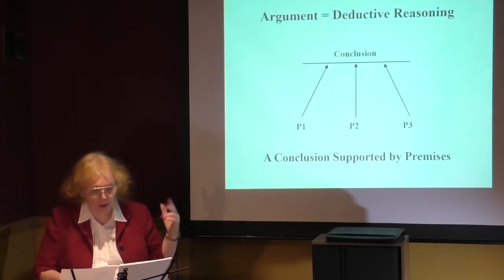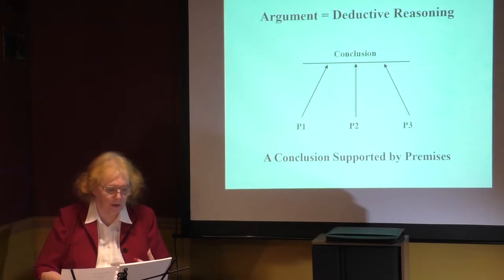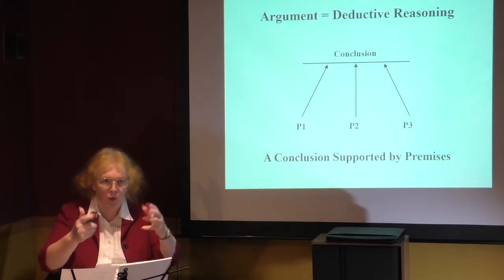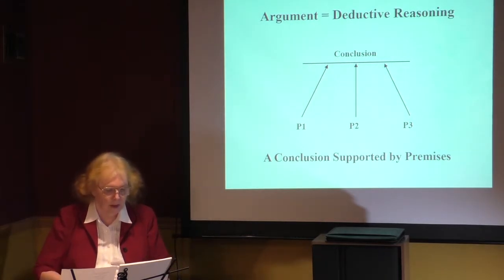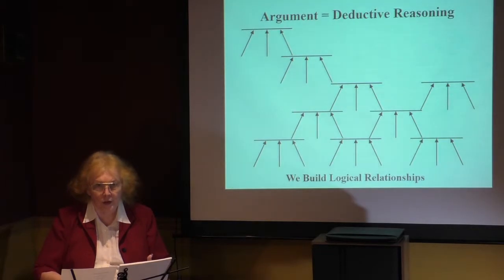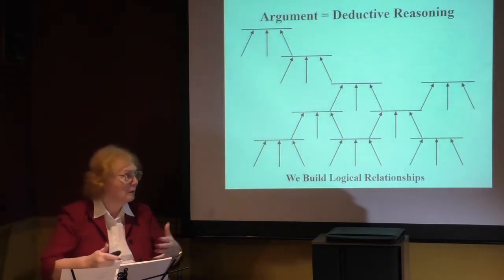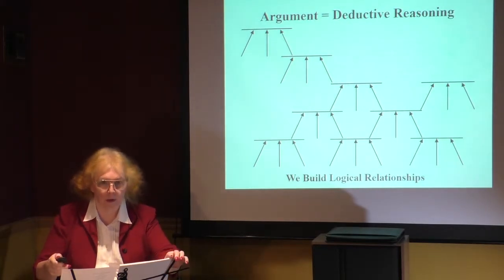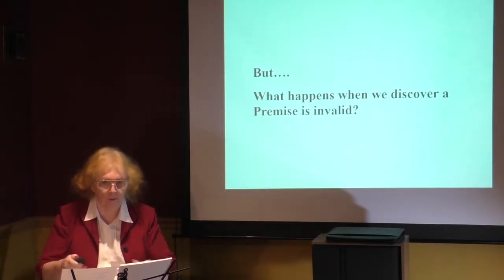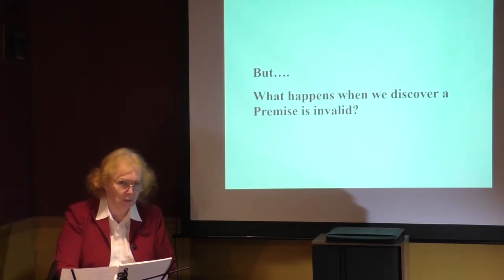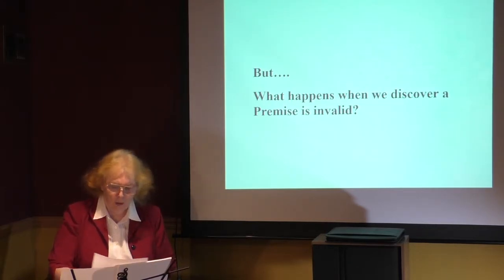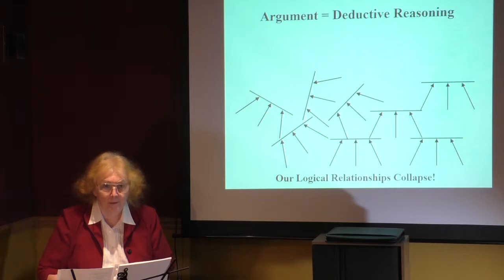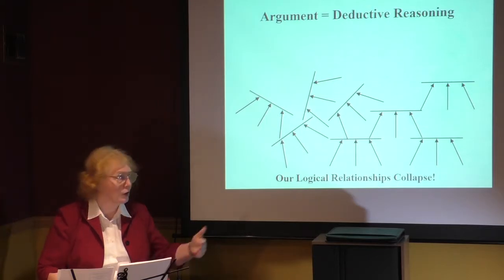We talked last time about the process of developing an argument, where we had a series of premises all leading to the support of a single conclusion. We can build logical relationships — a tower of logical relationships — based upon what we've developed through deductive reasoning. The question is, what happens when one of these premises goes wrong, when something doesn't work right and has been discovered to be invalid? Well, our arguments fall apart. This is our house of cards, and it just collapsed.